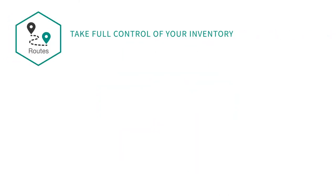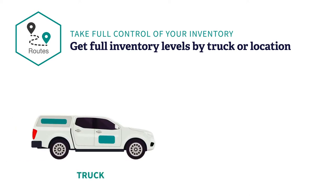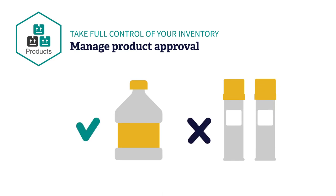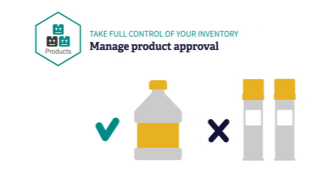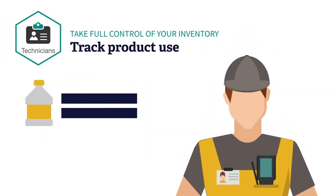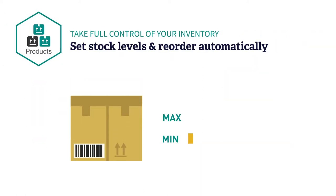Take control of your inventory — get full visibility into inventory levels by truck or location, and manage exactly which products you want your techs to be using. Then track product usage for each of your techs so you can balance inventory levels with production demand. Set minimum and maximum product stock levels along with automatic reordering.